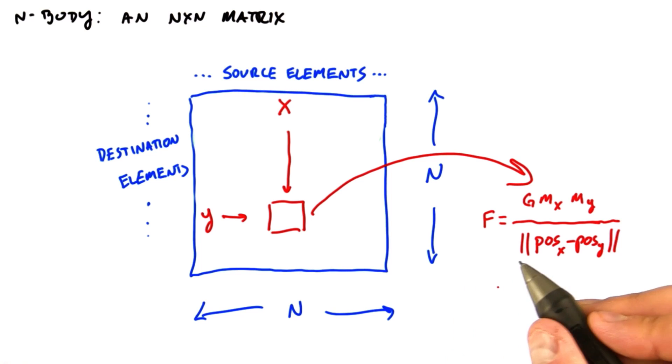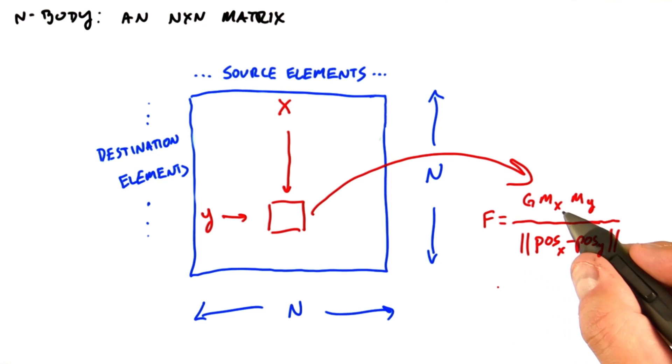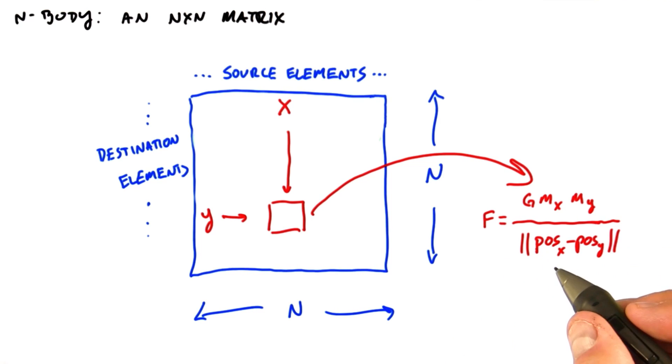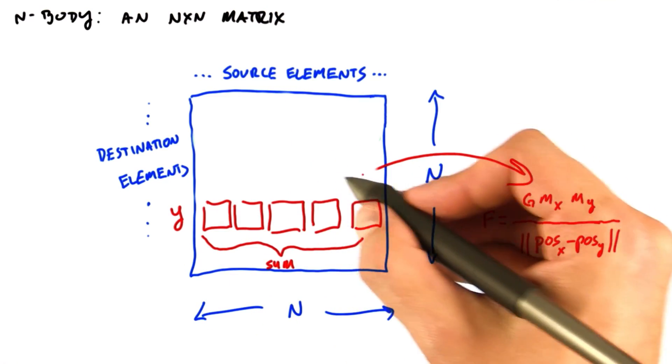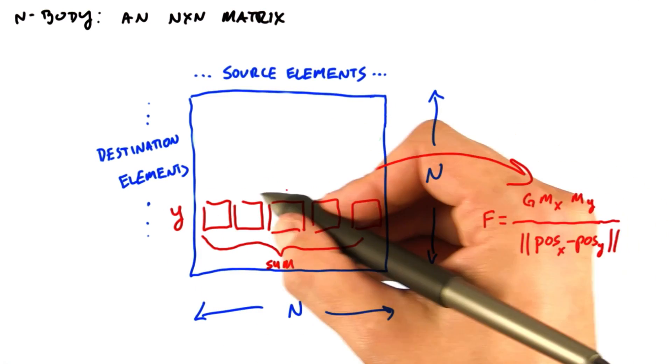This requires specifying parameters for each object. For gravity, this would be the mass and the position, x, y, z. Then each object, say object y, must add up all n forces that act on it.